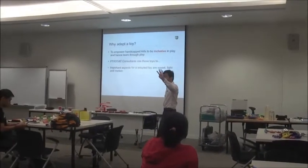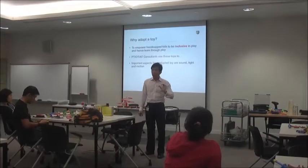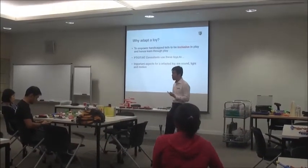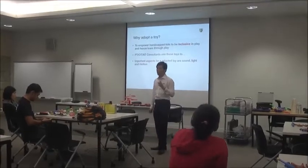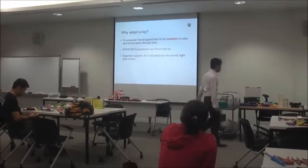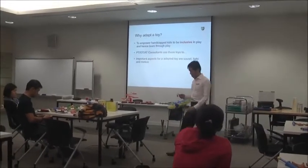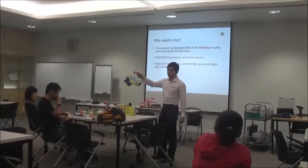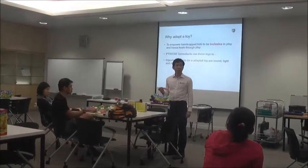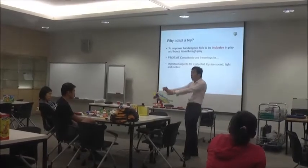So what do we look for in an adapted toy? It's just three things: sound, light, and motion — with motion being the least important. Feedback from a physical therapist or assistive technology consultant confirms that light and sound are primary. These encourage the kid to press the switch. Motion is the least important because even a little movement is sufficient.